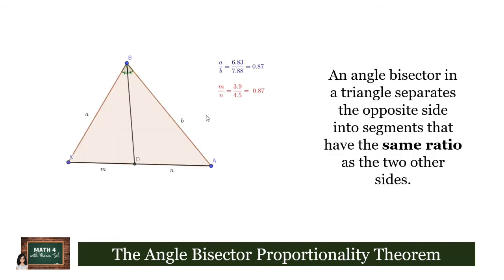Now let us investigate the effect of drawing an angle bisector in a triangle to the side opposite the angle it bisects. For simplicity, let us name the sides of the angle A and B and the segments of the opposite side M and N. Let's use our GeoGebra app to help us compute the ratios A to B and M to N.